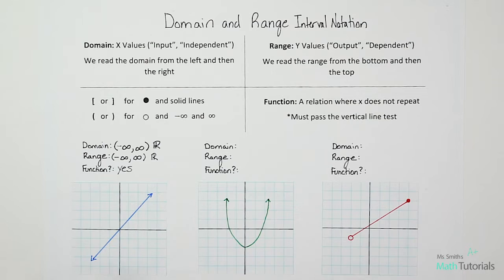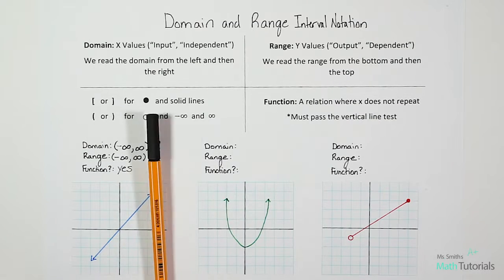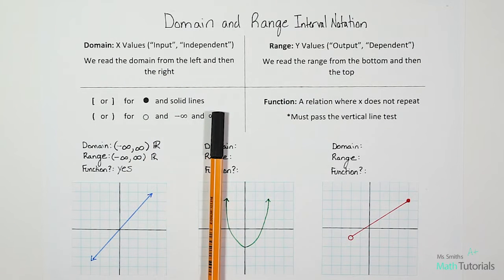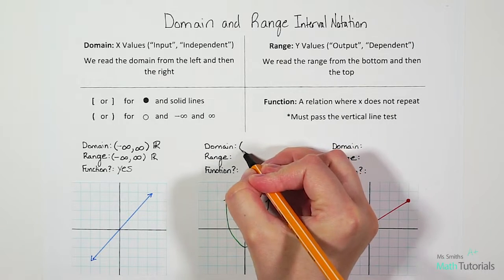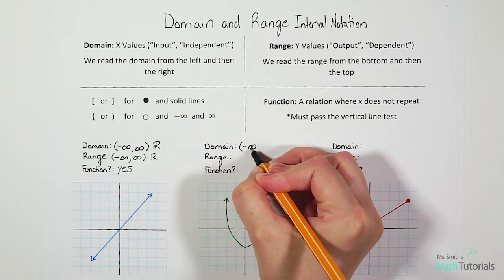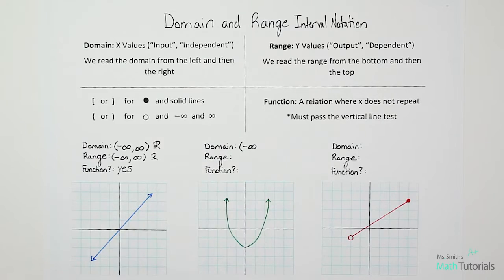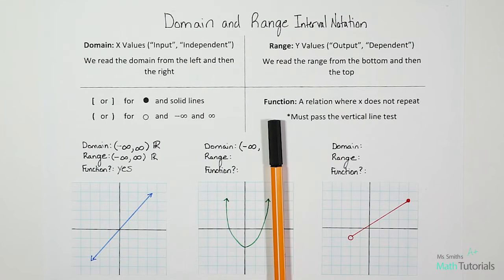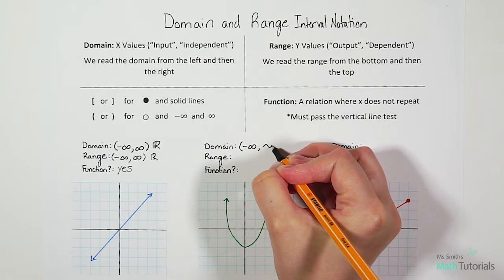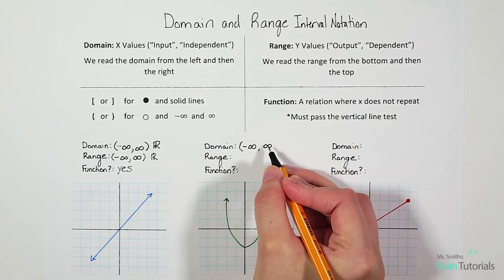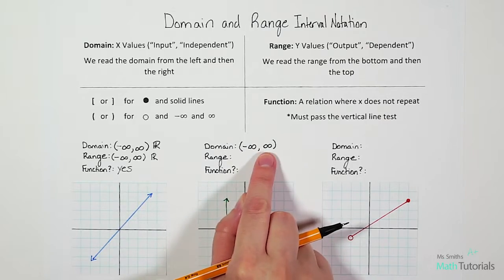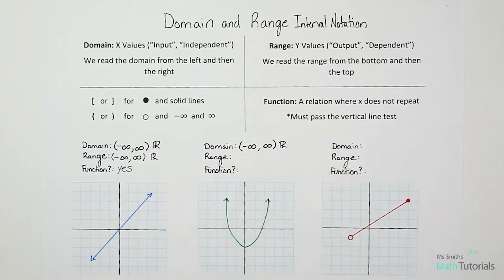Let's do another one. For domain on this one, we read domain left and then right. When I read from the left, what's the first place I hit? I hit an arrow, and an arrow means infinity. It's on the left, so we know it's going to be negative infinity — and infinities always get parentheses. When we come in from the right, what's the first place we hit? Another arrow, so it's going to be positive infinity with a parenthesis. Because we got that double infinity, we could say all real numbers if we wanted to.